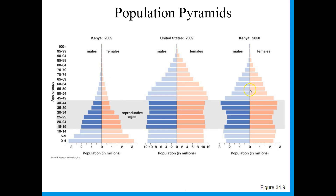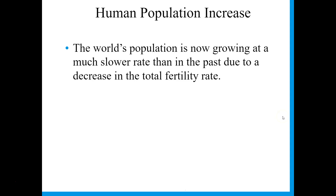Kenya is a much less developed country, but it's projected that Kenya's numbers are going to shift to look a lot more like the United States, where you'll have fewer people under reproductive age and more people over reproductive age, with that section of the pyramid sliding up. The world's population is growing slower now due to a decrease in total fertility rate, which has a lot to do with women's rate of education and an increase in urbanization, among many other factors. We are growing more slowly in general, at least in modernized countries.